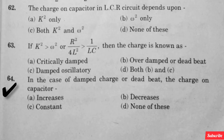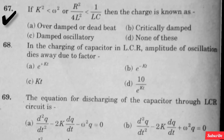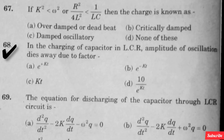In the case of damped charge or deadbeat, the charge on capacitor is — option A is right. If K² = ω² (or R²/4L² = 1/LC), then the charge increases without any oscillation, called — option B is right. The charge increases without any oscillations. If K² = ω², then the charge is — option B is right. If K² < ω² (or R²/4L² < 1/LC), then the charge is known as — option C is right. In the charging of capacitor in LCR, the amplitude of oscillation dies away due to factor — option B is right.